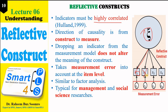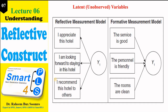For example, consider the hotel construct with items: 'I appreciate this hotel,' 'I am looking forward to staying in this hotel again,' and 'I recommend this hotel to others.' All three questions are talking about the same subject. So if we remove any one item, it has no effect on the overall meaning of our reflective construct.